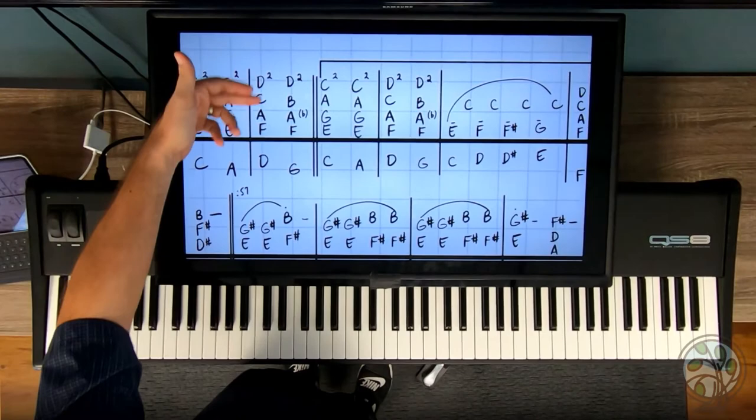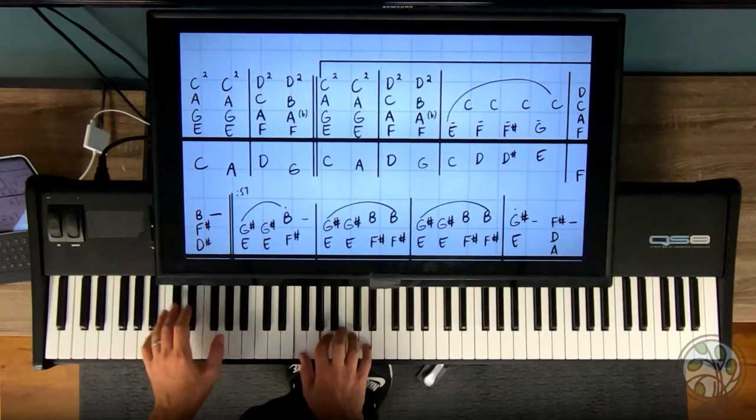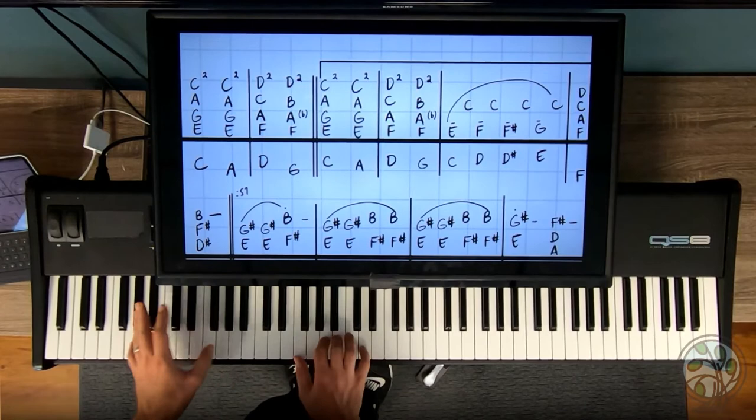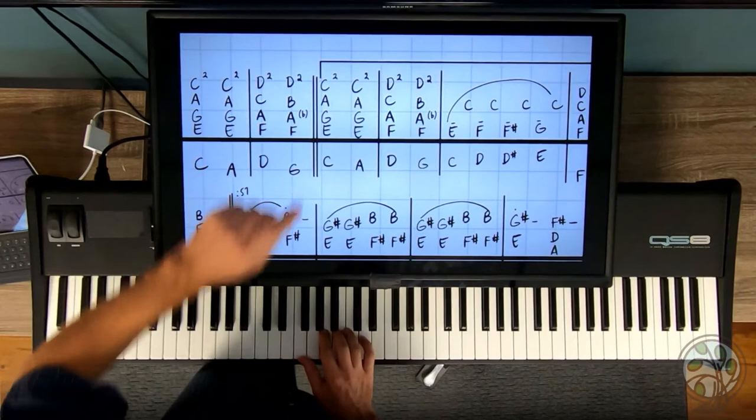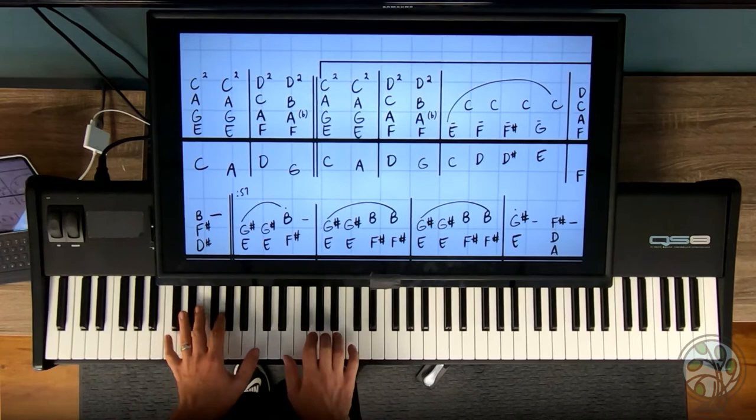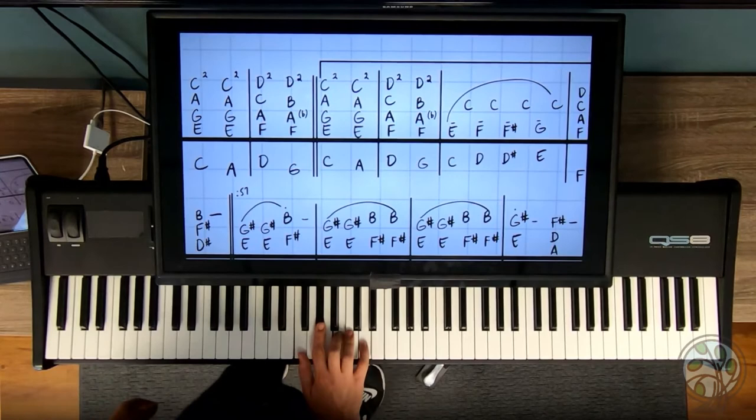Sometimes you can do the right hand two times like this. I played it different every time and that's okay. Sometimes you can make an A flat. That kind of adds a little bit of a different sound, right? That fully diminished seventh chord in there.